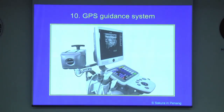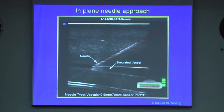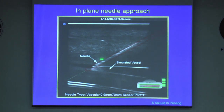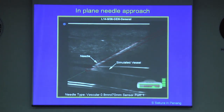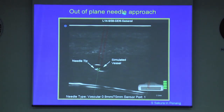Finally, there is another technology that some ultrasound companies have started to offer: a GPS guidance system. This slide shows an inline ultrasound image view with a GPS system. The technology provides information on the needle location, indicated by a red silhouette with the projected path in green. On the bottom right, you can see the footprint of the transducer with the relative needle position. This works with out-of-plane technique as well.